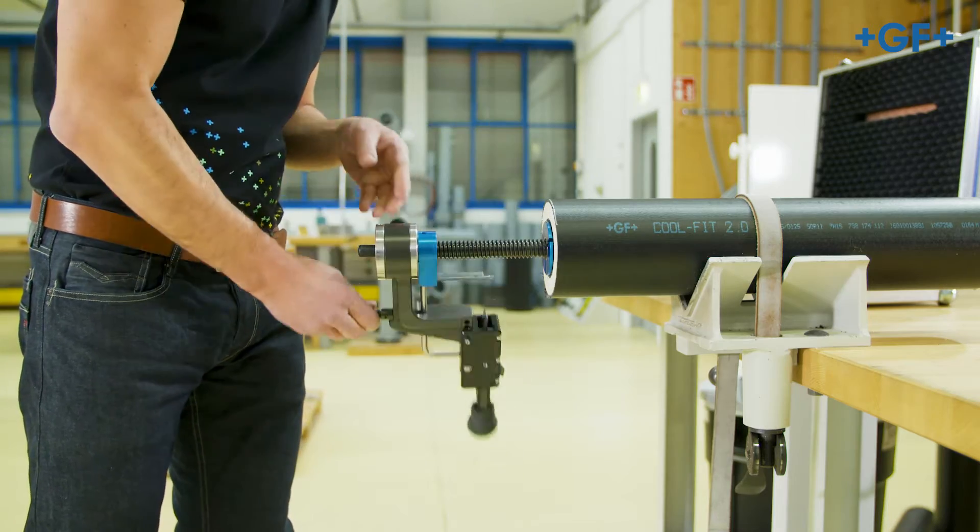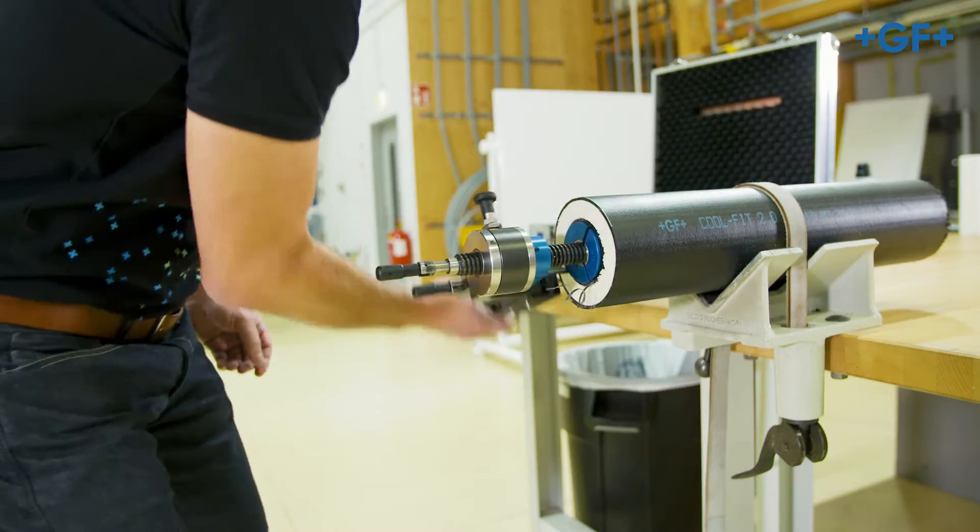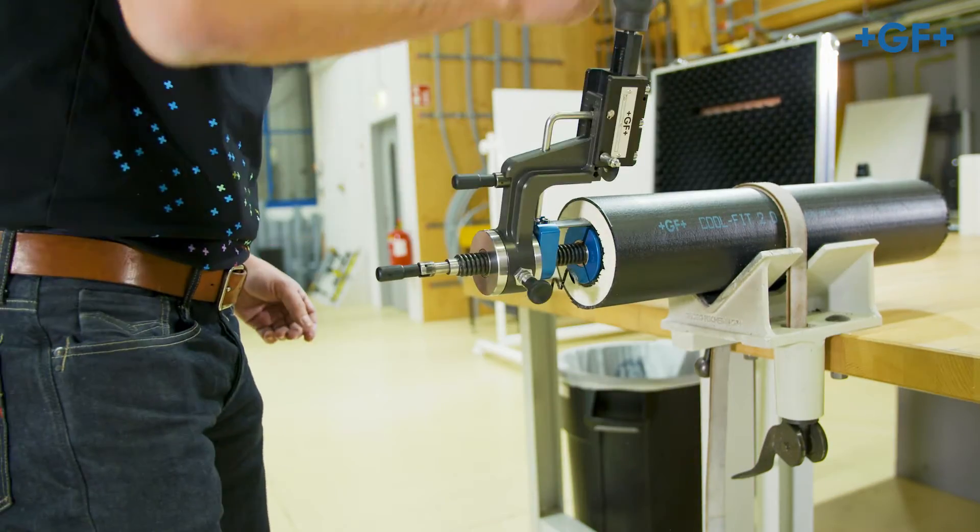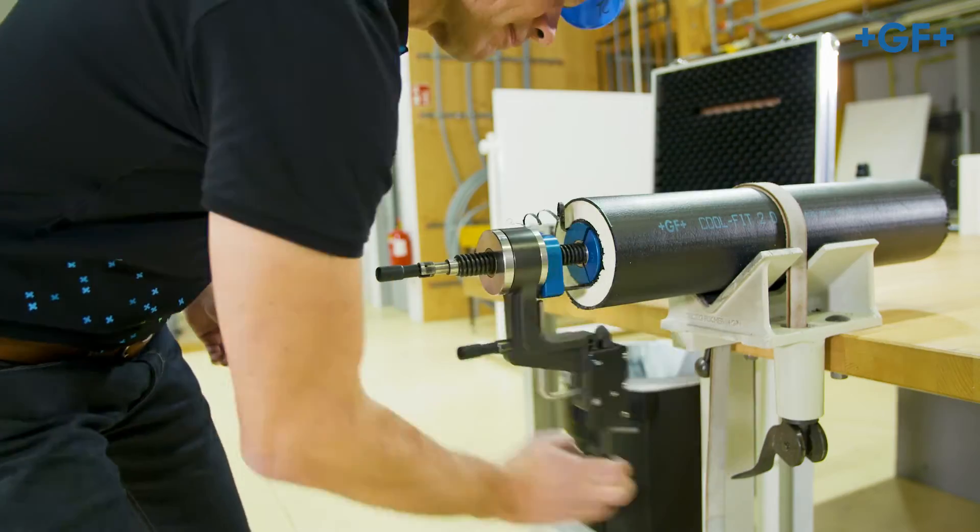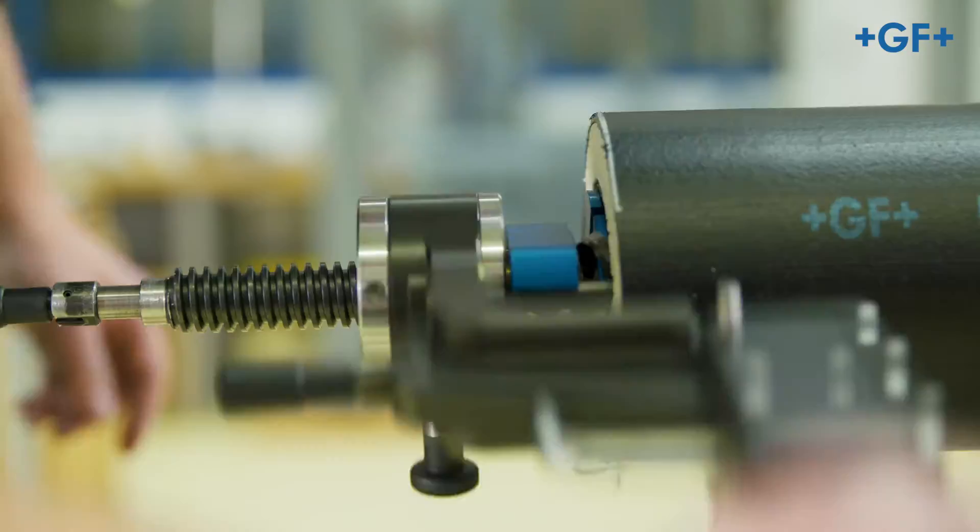Move the foam removal unit clockwise fully up to the stop on the spindle taper. The insulation is thus separated and the oxide layer on the inner pipe is peeled in the same step.